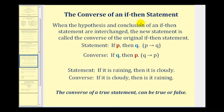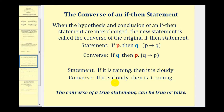Now let's talk about the converse of an if-then statement. When the hypothesis and conclusion of an if-then statement are interchanged, the new statement is called the converse of the original. So if the original statement is if P then Q, then if Q then P is the converse. For example, if we're given 'if it is raining then it is cloudy,' the converse would be 'if it is cloudy then it is raining.'